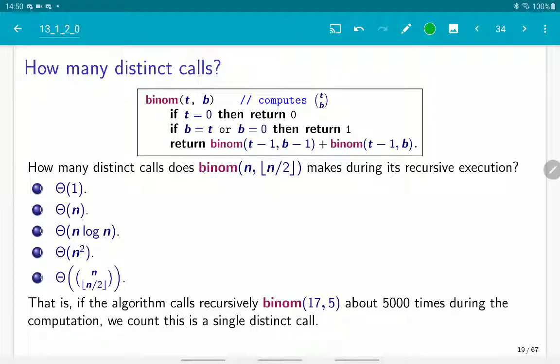n, n log n, n square, and n choose n over 2. By the way, n choose n over 2, this number is equal to roughly 2 to the n over square root of n. By roughly, I mean up to some small constant. So, this is the largest binomial coefficient with rank n. So as I said, the answer, figure out the answer because this is going to be important.